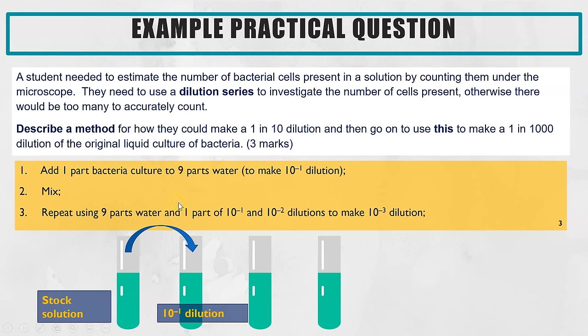Then it's just repeating this twice over. So you would then take one part of the 10 to the minus one and mix that with nine parts water, mix it up, you would then take one part of that 10 to the minus two and mix with nine parts water, mix it up and that is how you get your 10 to the minus three or in other words one in one thousand. So that is typically a three mark question and those are the key marking points.